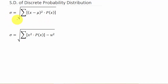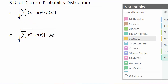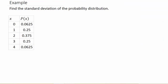This formula is: the standard deviation is the square root of the sum of (x minus mu) squared times P(x). And this one is: the square root of the sum of x squared times P(x) minus mu squared. Let's go ahead and calculate it using the first formula, then the second, and you'll see we get the same answer.